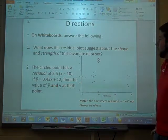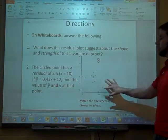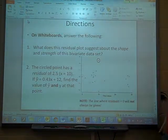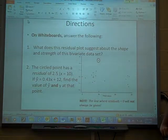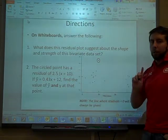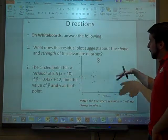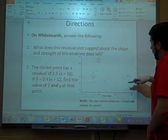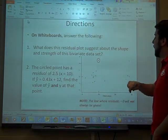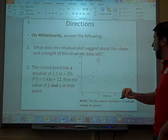The first thing about it is, number one, asks what does this residual plot suggest about the shape and strength of this bivariate data set? Well, first of all, assuming it's a linear regression, if we use a curve regression to make this, that's a different story. But assuming that we made a linear regression, we see it all scattered out, right? So it looks like that whatever regression we made is going to work. There's no clear pattern.